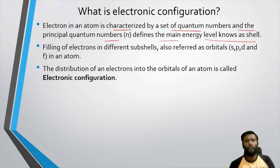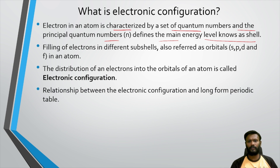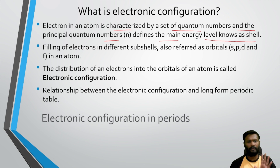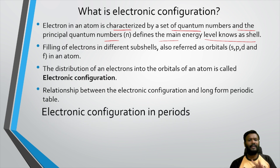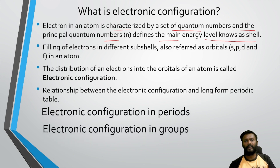The distribution of electrons into the orbitals of an atom is called electronic configuration. There is a relationship between the electronic configuration and the long form of the periodic table. We will look at electronic configuration in periods and electronic configuration in groups.